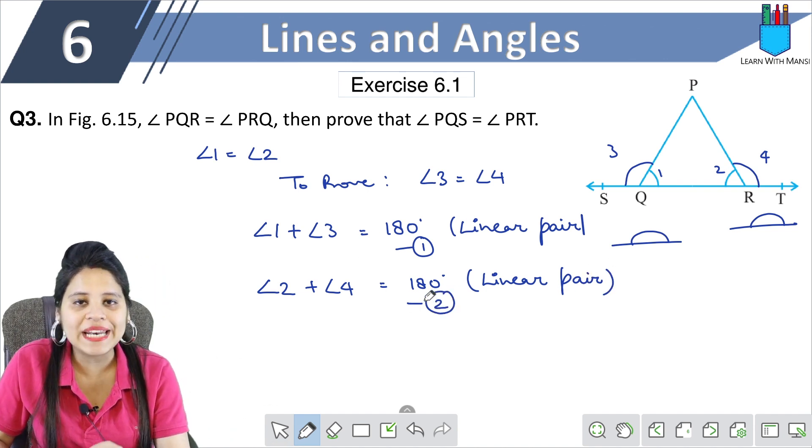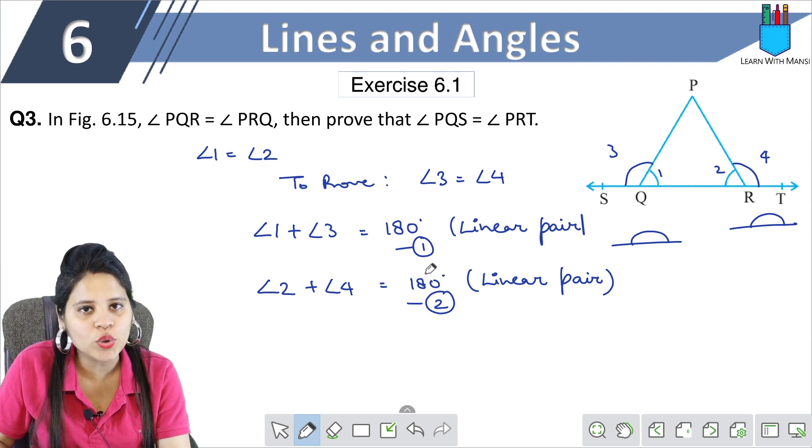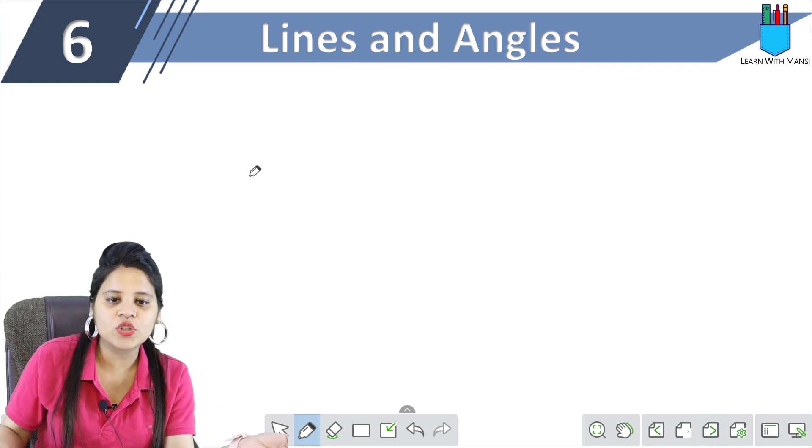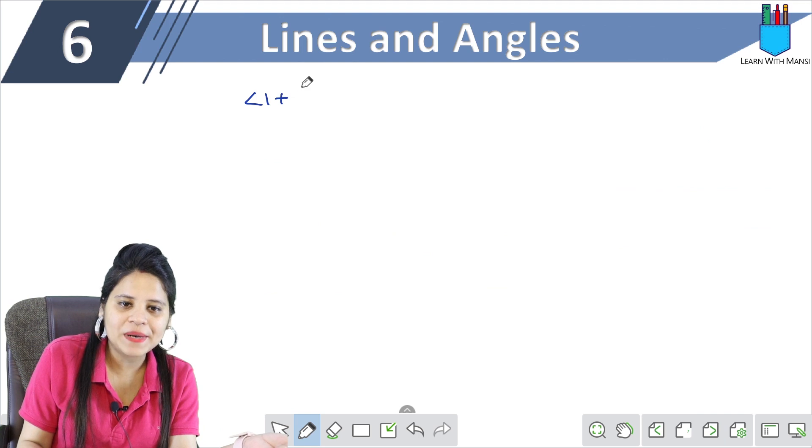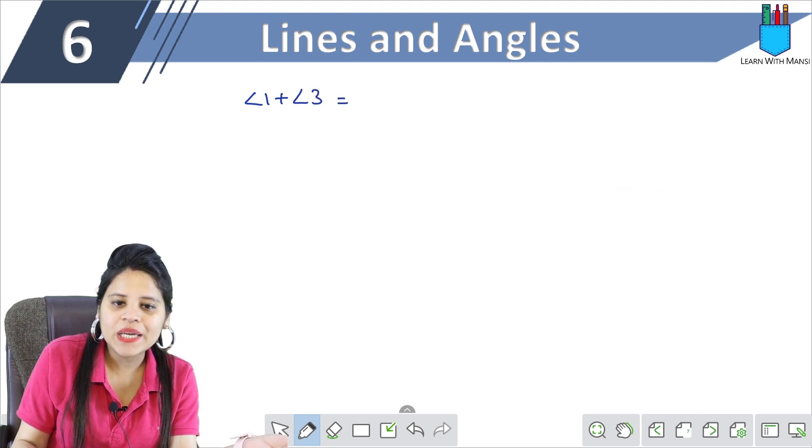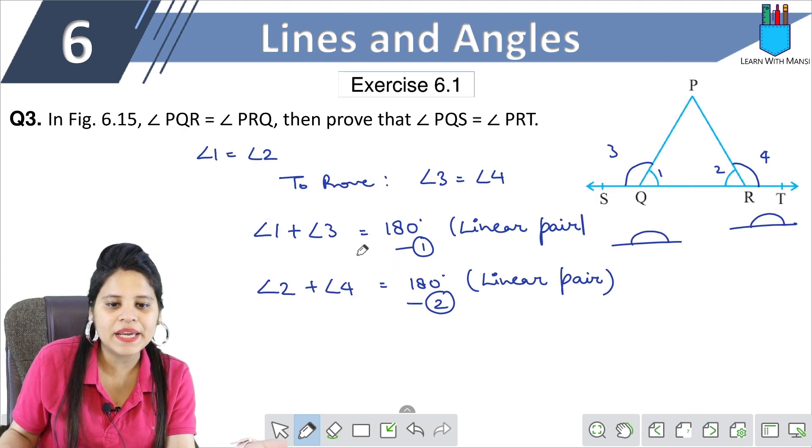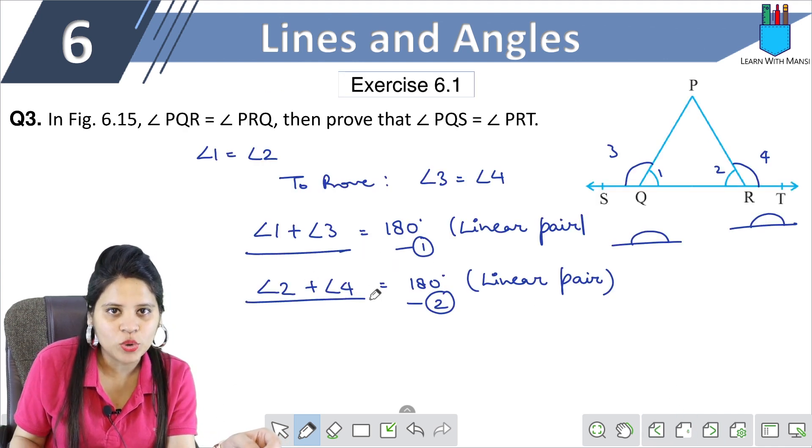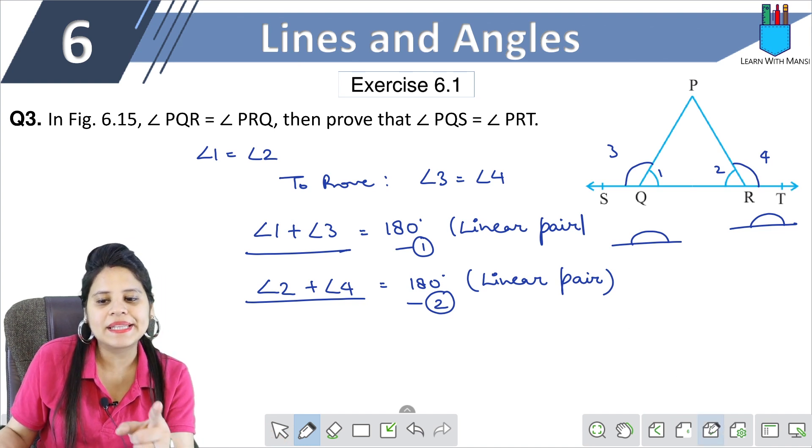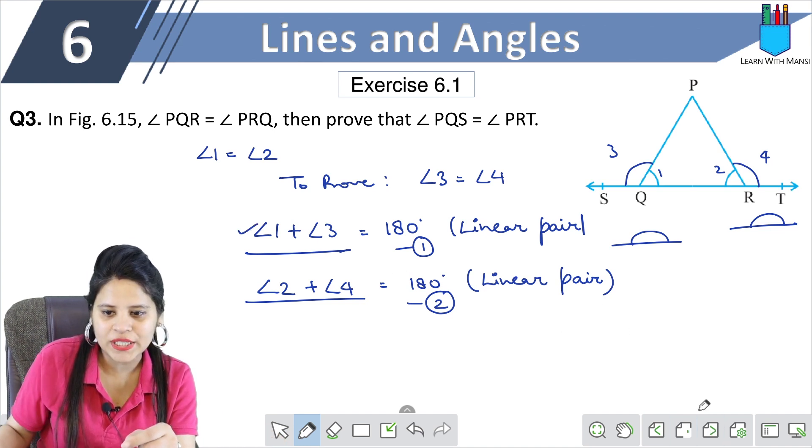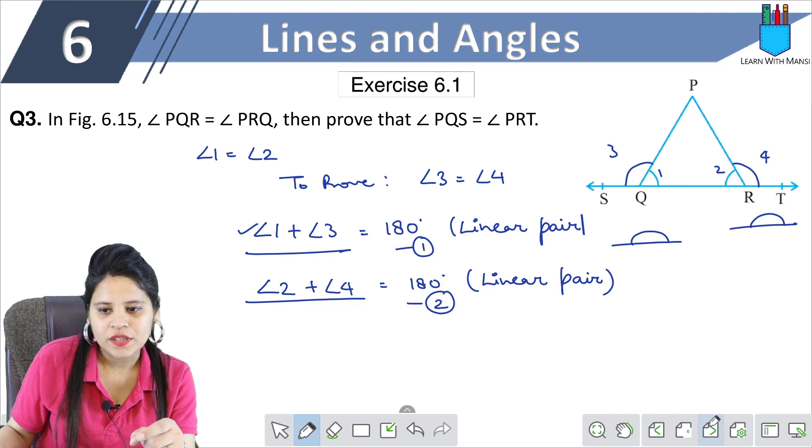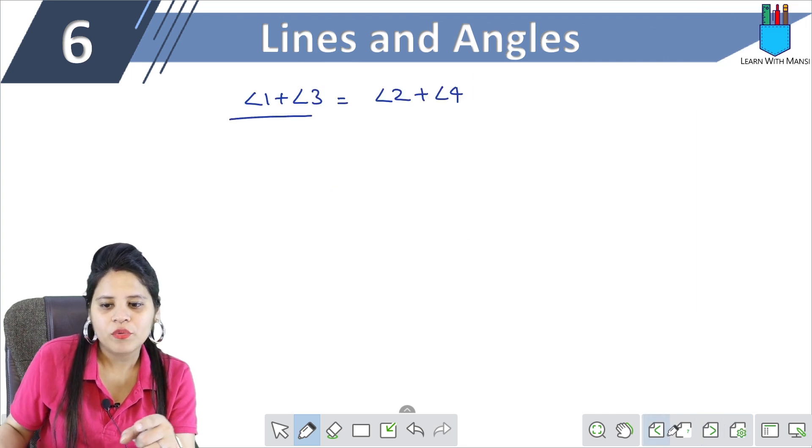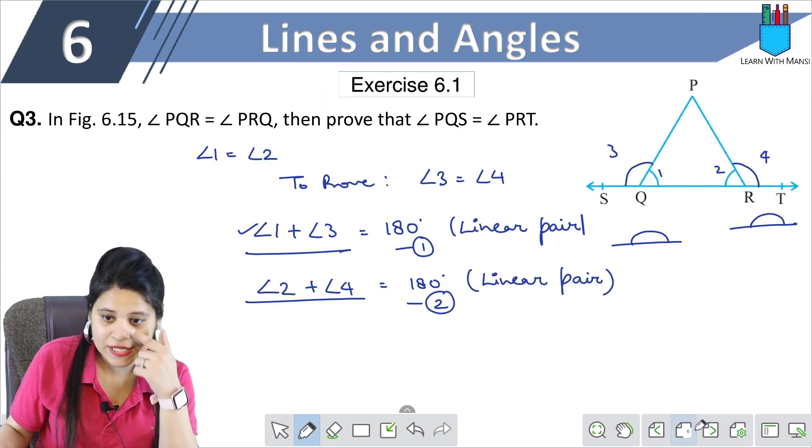Now from equation 1 and 2, here see, the right hand side is equal. So I can say angle 1 plus angle 3 is equal to angle 2 plus angle 4. What I have done here? 180, the right hand side is equal. So the left hand side will be equal.